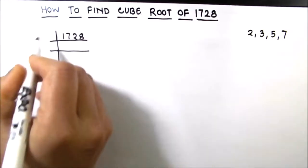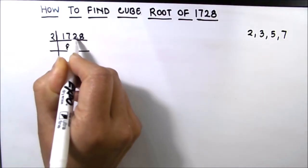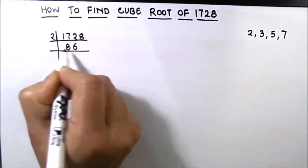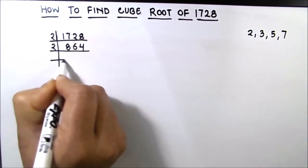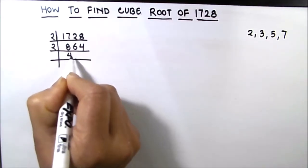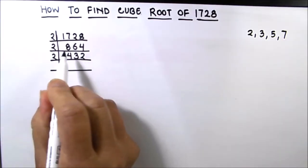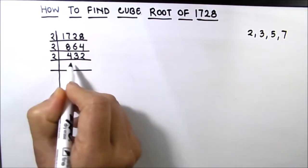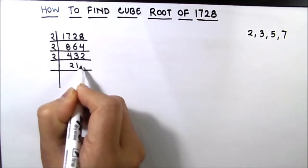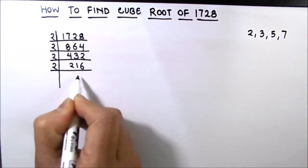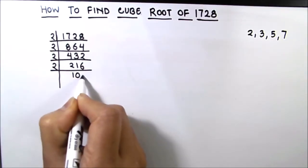2 times 8 is 16, 1 is carried over, this becomes 12, 2 times 6 is 12, and 2 times 4 is 8. Again we will use 2 as the divisor: 2 times 4 is 8, 2 times 3 is 6, and 2 times 2 is 4. Continuing: 2 times 2 is 4, 2 times 1 is 2, 1 is carried over, this becomes 12, 2 times 6 is 12, 2 times 1 is 2, and 2 times 8 is 16.